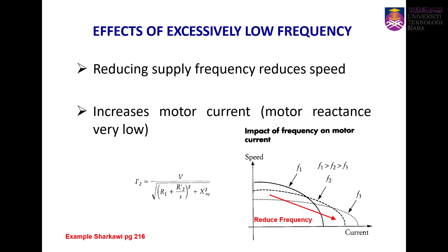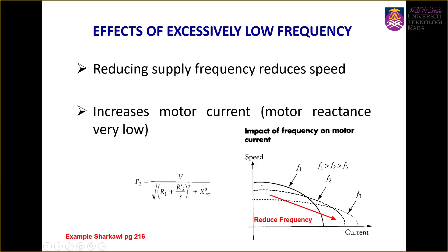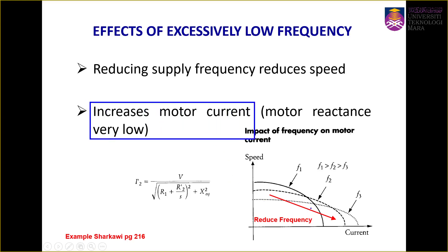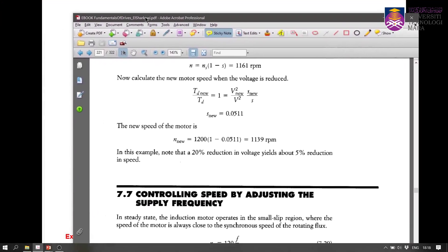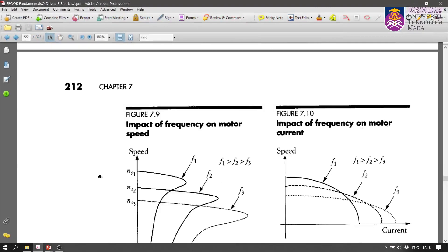Now let's look at the effect of excessively low frequency. Reducing the supply frequency by a very significant amount reduces speed — of course. However, it also increases motor current. When frequency is reduced, the reactance x decreases, causing the current I to increase. This is undesirable because you have a high current running in your motor.